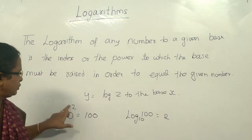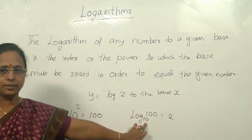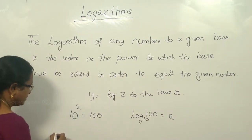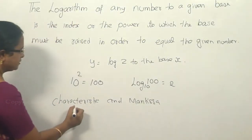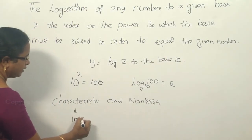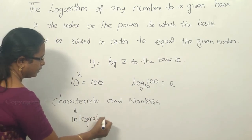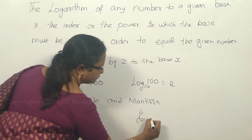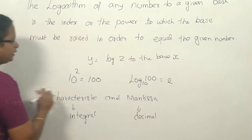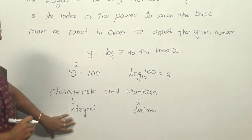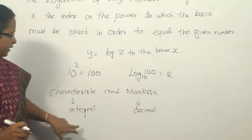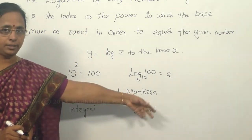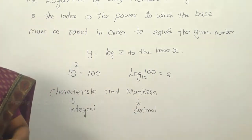This 2 is expressed in terms of log of 100 to the base 10. In logarithm there are two parts: characteristic and mantissa. The characteristic is the integral part and the mantissa is the decimal part of the logarithm. Whatever result you get, the integer value is the characteristic and whatever comes after the decimal point is the mantissa.